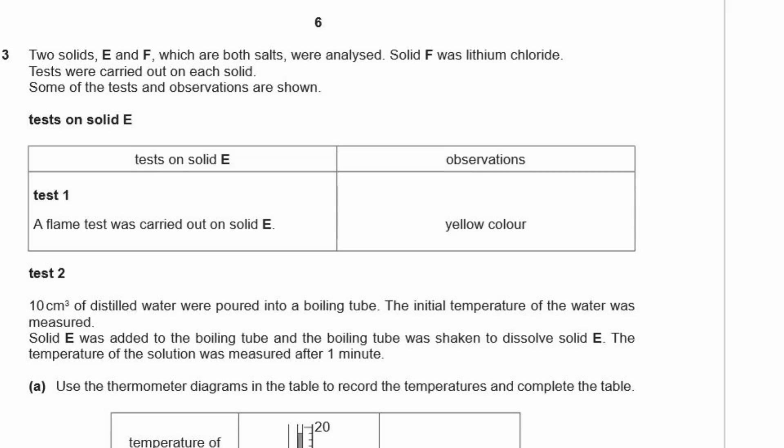Question three. Two solids, E and F, which are both salts, were analyzed. Solid F was lithium chloride. Tests were carried out on each solid. Some of the tests and observations are shown. So the tests on solid E, which is our unknown salt. So we start off with test one. A flame test was carried out on solid E and it was a yellow color. Well, yellow, that is for sodium. Alright, so that's part of our answer, I'm sure.